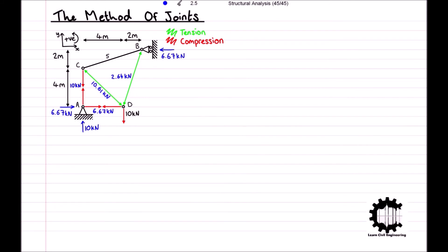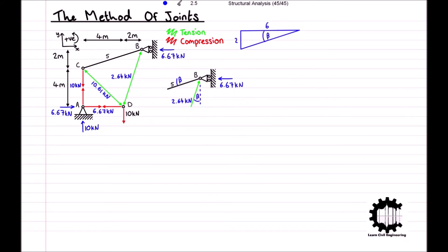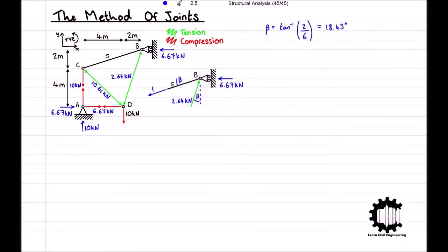Finally, we need to determine the axial force in bar 5. We isolate node B and denote the angles of the bars. We denote the angle between the x-axis and bar 5 as beta. Because the structure is symmetrical about the line from node A to node B, the angle between the y-axis and bar 4 is also beta. Using trigonometry, beta equals the inverse tangent of 2 over 6, which is 18.43 degrees. We assume the axial force in bar 5 is tensile.